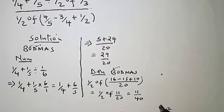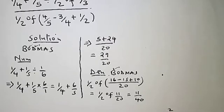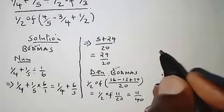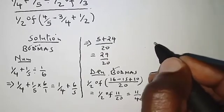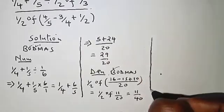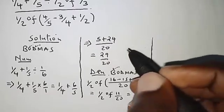From there we are going to have the numerator divided by the denominator. The numerator we already have as 29 over 20.